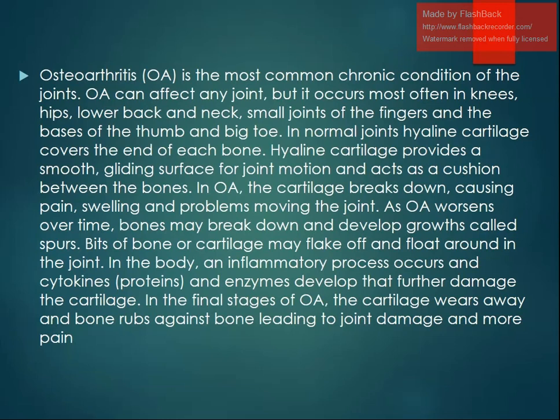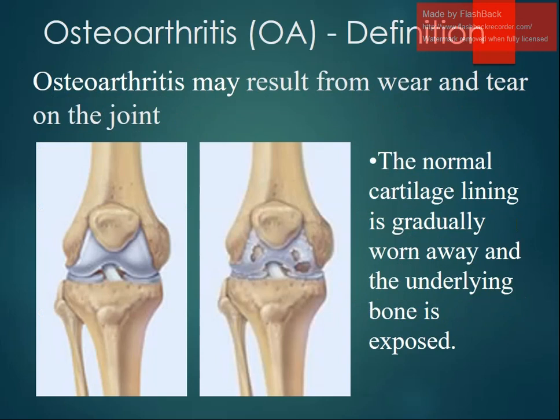As osteoarthritis worsens, the bones may break down and develop growths called bone spurs, and bits of bone or cartilage may float around in the joint. An inflammatory process occurs and cytokines and enzymes develop that further damage the cartilage. In the final stages, the cartilage wears away and bone rubs against bone, leading to joint damage and more pain.